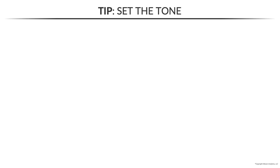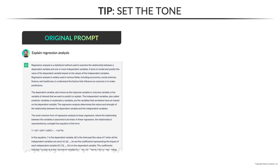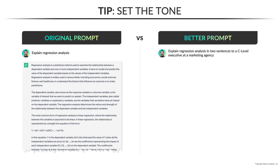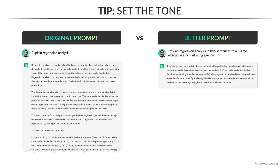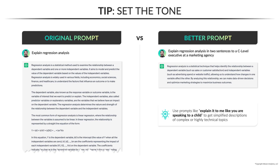One of the most useful and practical prompt engineering tips is to set the tone in order to calibrate the complexity of the response. For example, if you type 'explain regression analysis,' you'll likely get a pretty technical, textbook-style response. But if you update your prompt to 'explain regression analysis in two sentences to a C-level executive at a marketing agency,' you'll get a very different result. The output references marketing-specific metrics like ad spend and website traffic, and uses phrases like 'data-driven decisions' and 'optimized marketing strategies,' which are likely to resonate with a C-level marketing executive. The pro tip here: you can use prompts like 'explain it to me like you're speaking to a child' to get simplified descriptions of complex or highly technical topics — a great way to learn, and much more efficient than combing through dozens of websites and articles.